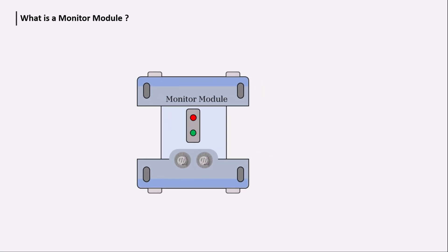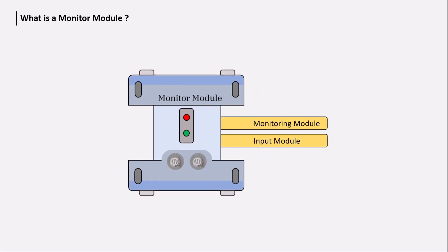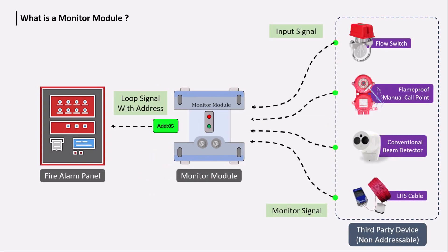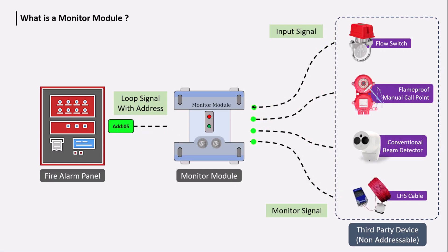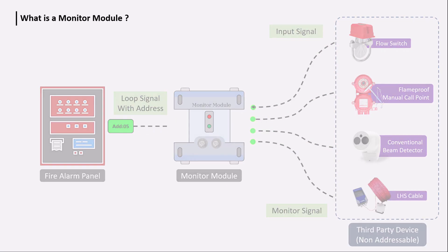The fire alarm monitor module is also known as the input module. The input module receives input signals from third-party devices which are non-addressable and sends signals to the fire alarm panel with an address. That means when third-party devices need to be connected to an addressable fire alarm panel and their pin location needs to be identified, the monitor module is used.